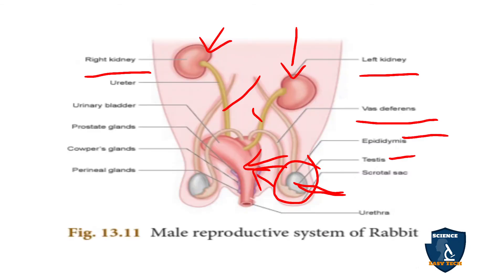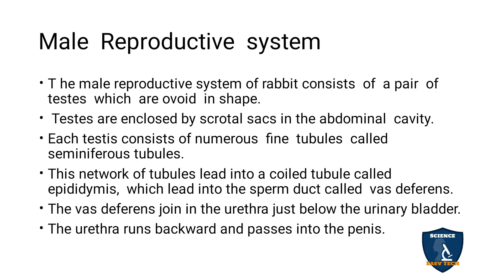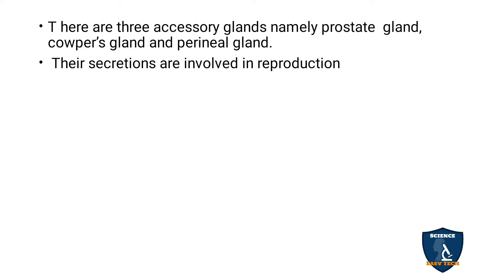The vas deferens joins the ureter just below the urinary bladder. The vas deferens and the ureter are joined at the back side of the urinary bladder, and the vas deferens then passes through the penis.